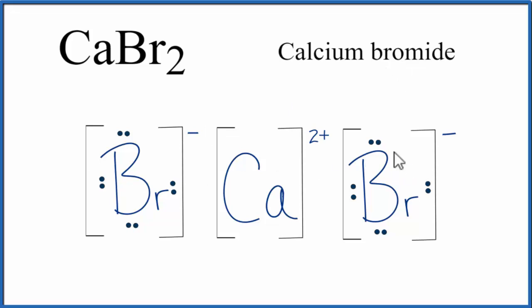Note that this is what we call a formula unit. With ionic compounds, they normally come in crystals and they're made up of a bunch of these formula units in a repeating pattern.